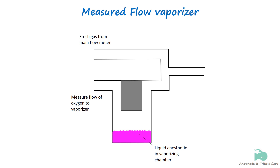Another method of regulating vaporizer output is the measured flow method. This method is used in older types of anesthetic vaporizers. It involves a vaporizing chamber where an anesthetic agent is heated at a temperature above its boiling point. A measured flow of oxygen is allowed to pass to the vaporizing chamber, which carries anesthetic vapor at a very high concentration.